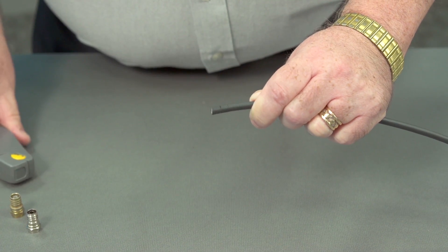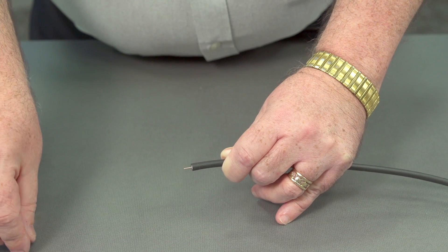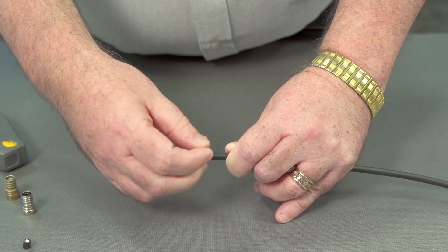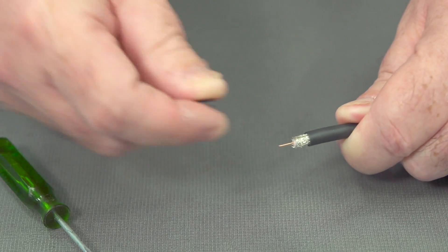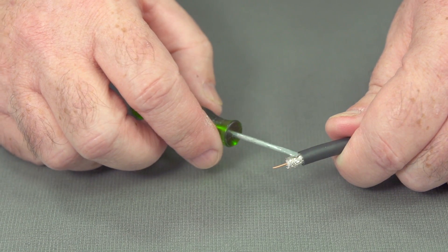Let's remove the stripper. See the center conductor. Pull the jacket off, and here we can see the rest of it.